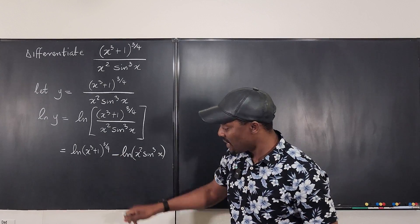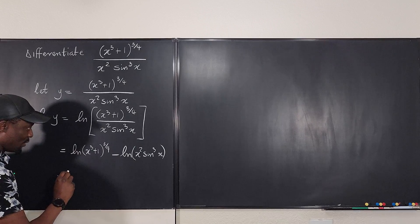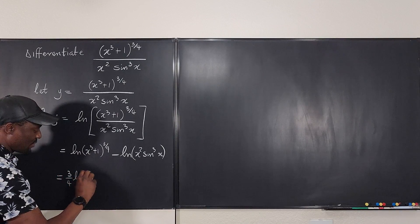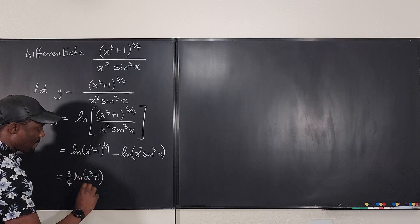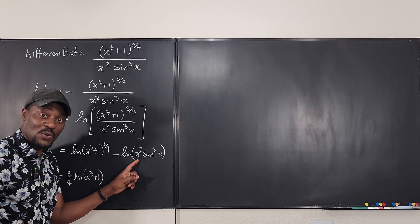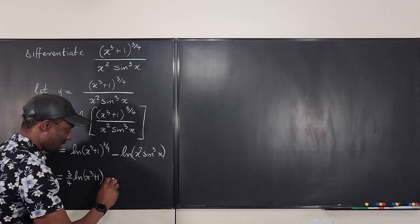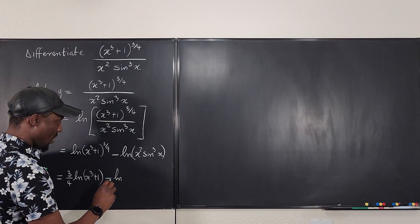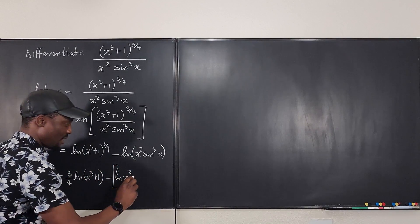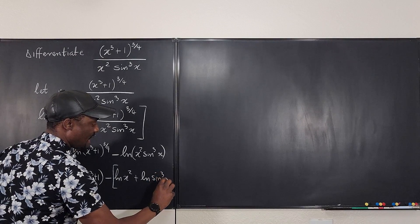And we also know that we can rewrite this as being equal to 3 over 4 natural log of x cubed plus 1. And because this is a product, we can actually write it as a sum. We can write this as minus the natural log of x squared plus the natural log of sine cubed x.